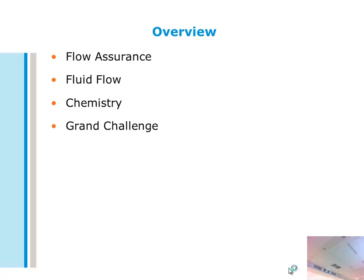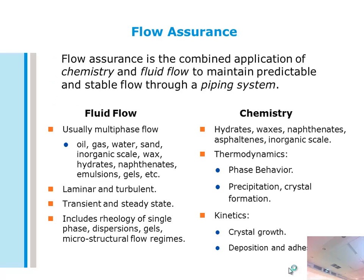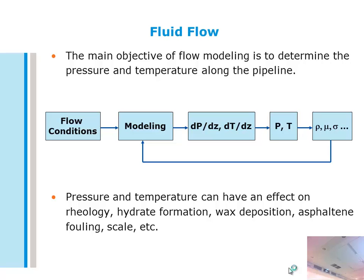Today I'm going to talk about flow assurance, and actually complicate this fluid flow even further by adding chemistry. Flow assurance is the combined application of not only fluid flow but chemistry as well — we're trying to predict stable flow through a piping system. From a fluid flow perspective we have oil, gas, water, sand, wax, many different components — laminar, turbulent, transient, steady state — plus different rheology, dispersions, and emulsions. On the chemistry side: hydrates, wax, asphaltenes, their thermodynamics and kinetics — how they form, grow, and deposit along the pipeline.